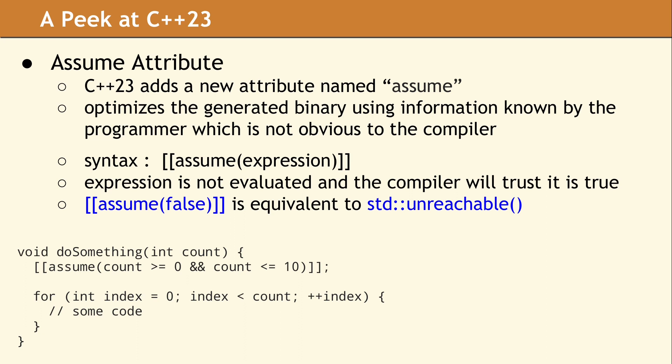The [[assume]] attribute has a slightly different meaning when used inside a function which can be called at compile time. If the compiler can prove the assumption would be violated, it can return a compile error, produce a warning, or even ignore the assumption. If the compiler cannot prove whether the assumption is true or false, it must ignore the assumption. There is another aspect of this attribute which can be a bit tricky. What happens if the expression is false at runtime? The compiler can assume the code is unreachable, and this has the same effect as calling std::unreachable. If the program reaches the [[assume]] attribute and the expression is false, your program will have undefined behavior.